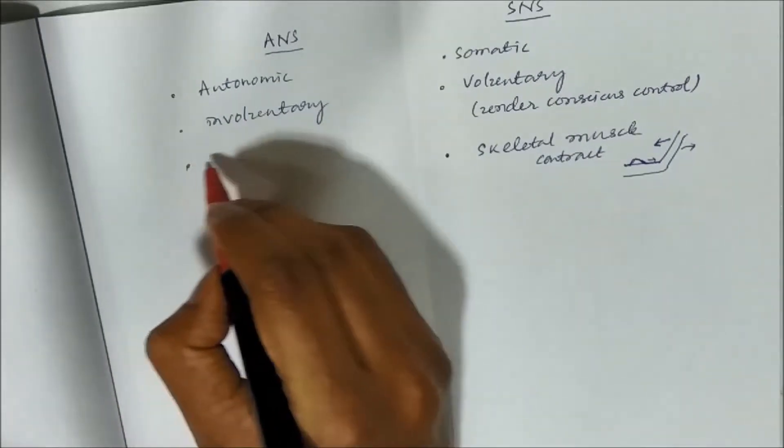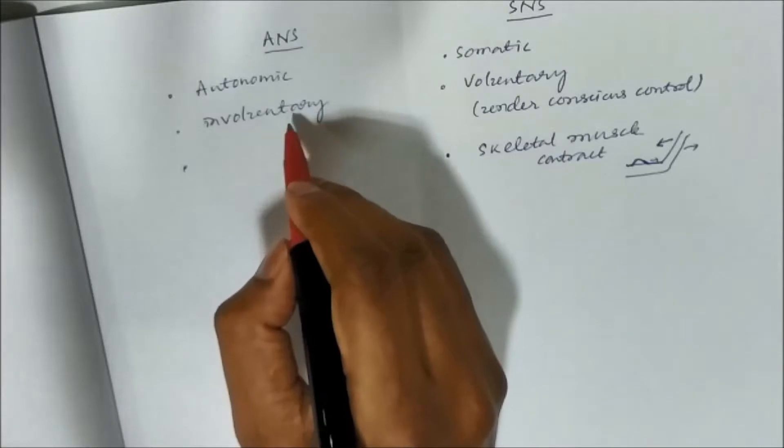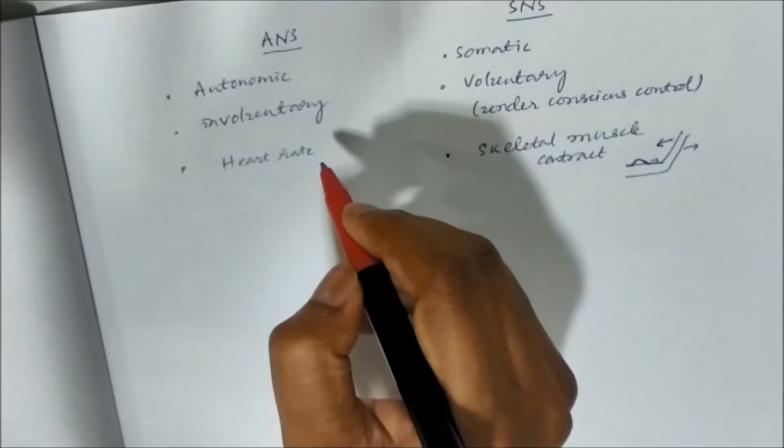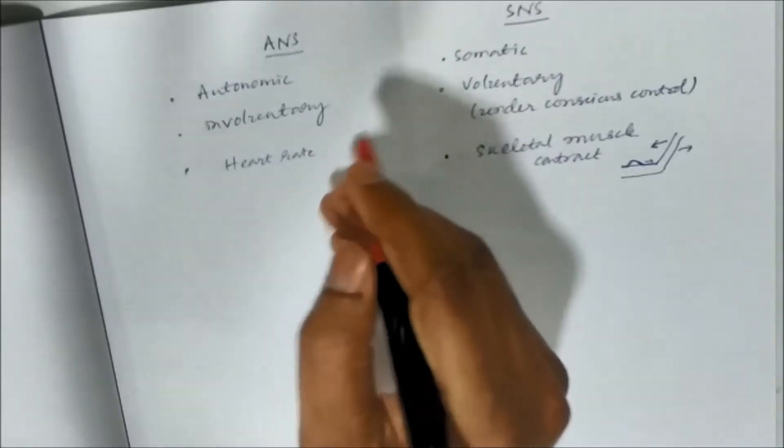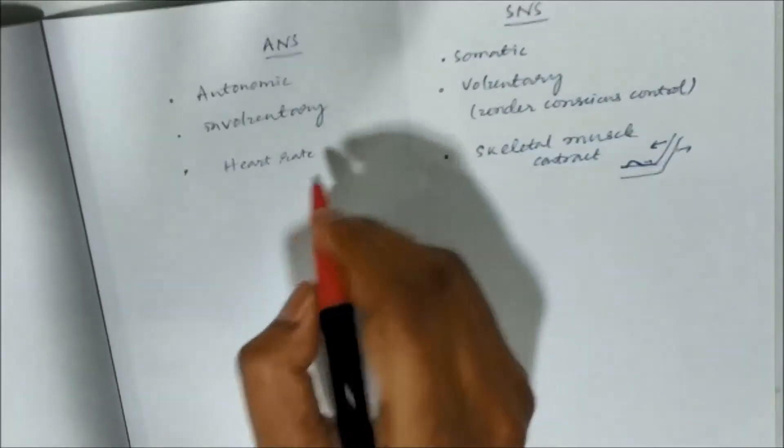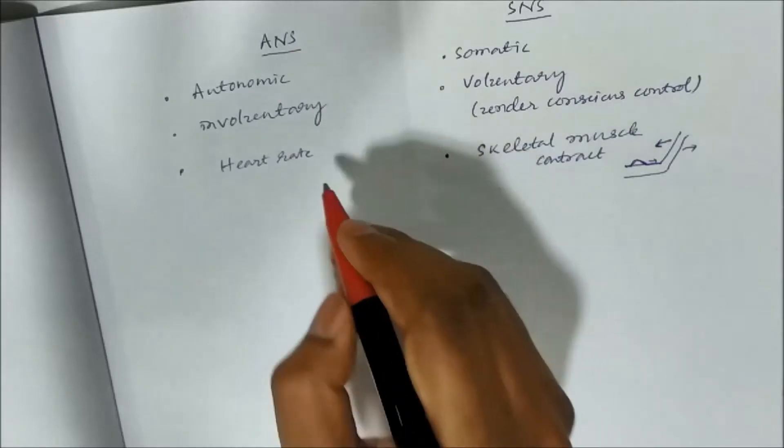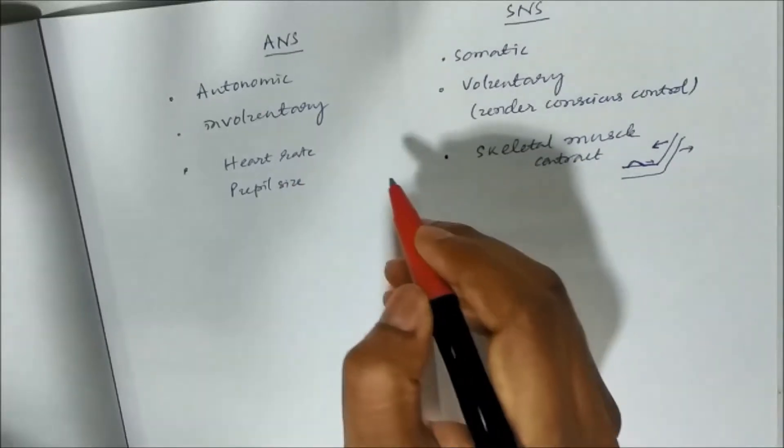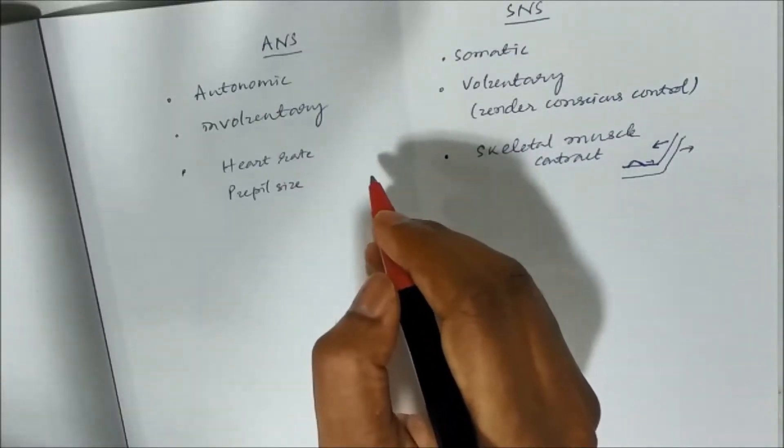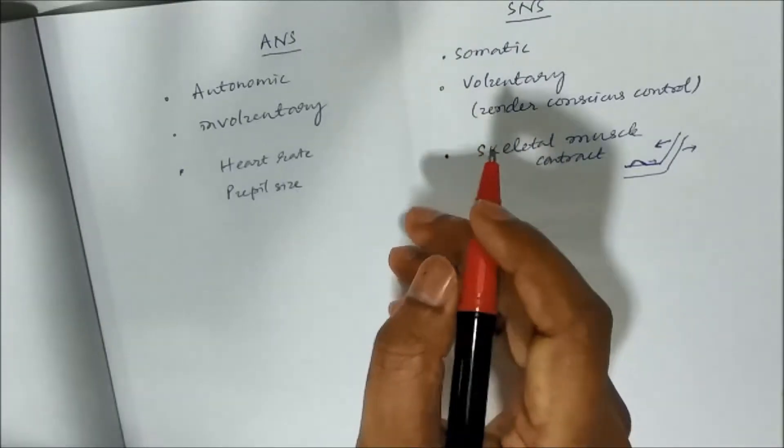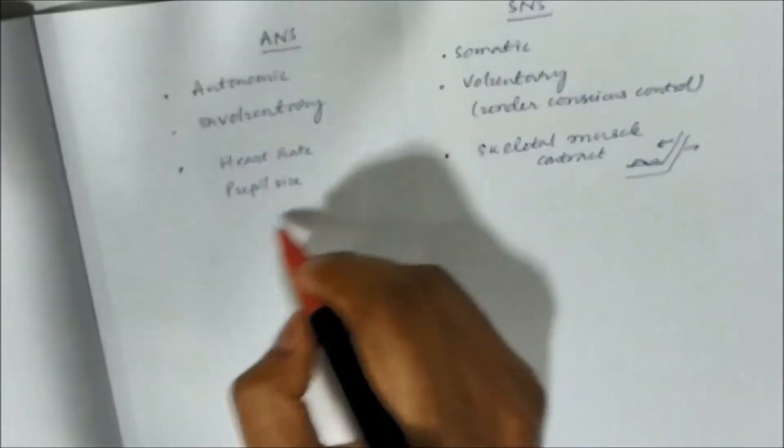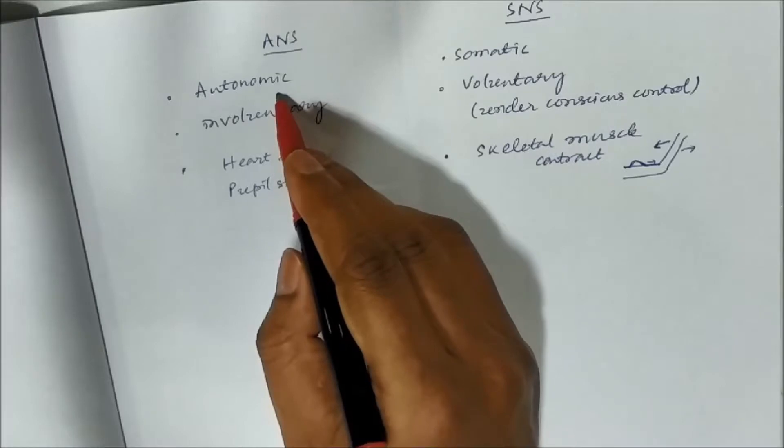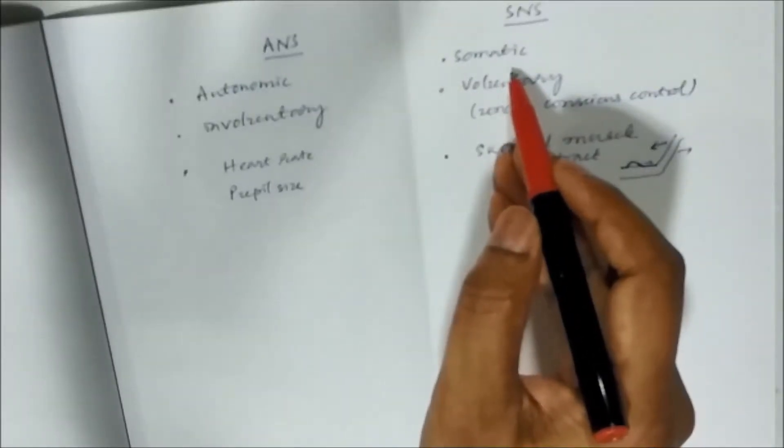Whereas your ANS is not under your conscious control. Suppose heart rate. So if you want to increase your heart rate, you cannot do that. If you run, then automatically your heart rate will increase. If you sit down, then the increased heart rate will again come to normal. Similarly, your pupil size. If light falls on your eye, the pupil size will decrease. And in the darkness, the pupil size will increase. So this is not under your control, but this is occurring on its own. That is why this is called autonomic and this is called somatic.